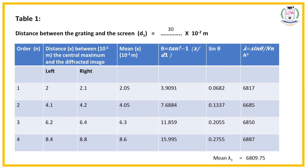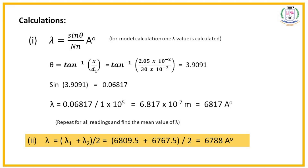I repeat both sets of calculations and find the mean of both values. The result is: the wavelength of the given laser light, λ = 6788 angstroms. I hope you all understand the procedure of this laser experiment with the calculations. I will meet you in the next video with a new kind of experiment. Thank you.